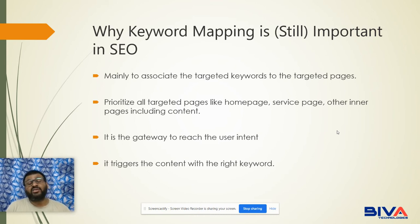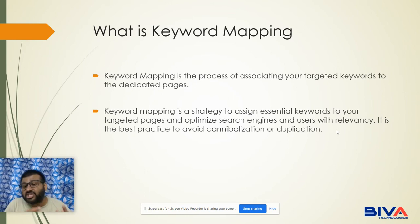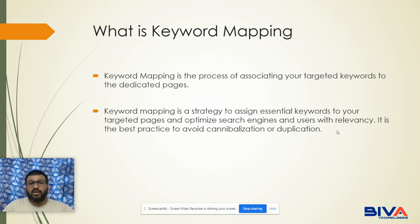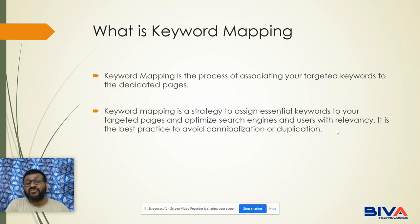It triggers the content with the right keyword through which you can generate high conversion. Keyword mapping is the process of associating your targeted keywords to dedicated pages. For example, suppose you have a 10 to 15 page website and you have different keywords for every page — the architecture of the page can confirm the business goal. Keyword mapping is a strategy to assign essential keywords to your targeted pages and optimize for search engines and users with relevancy, helping you identify only the relevant keywords.